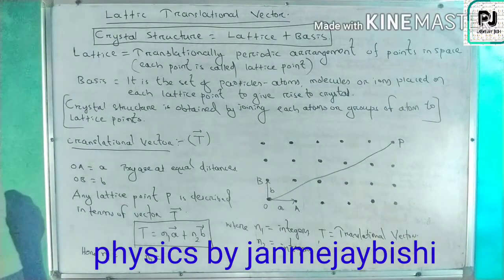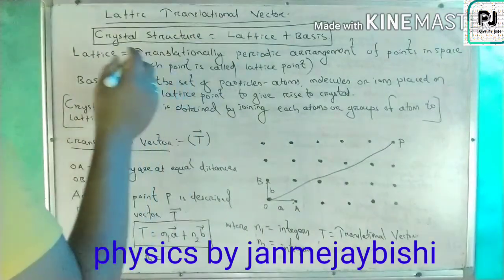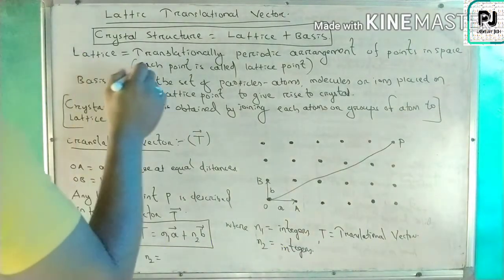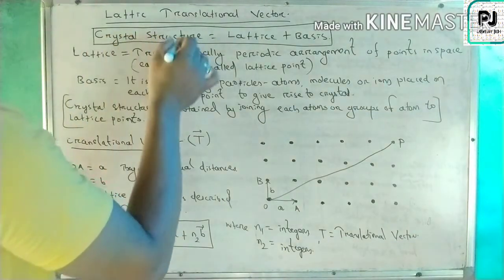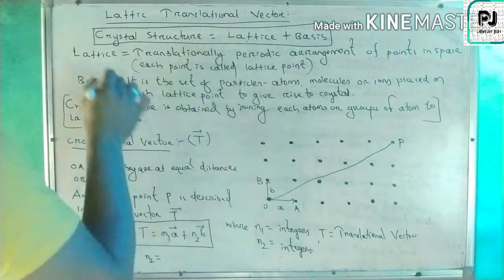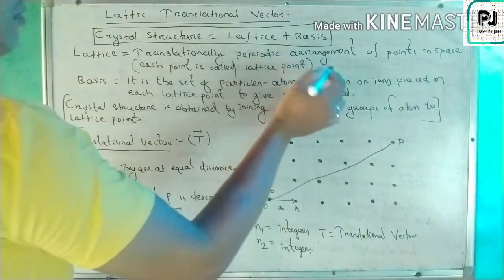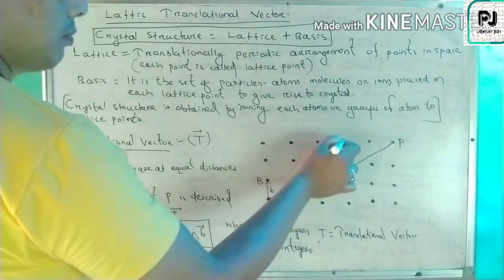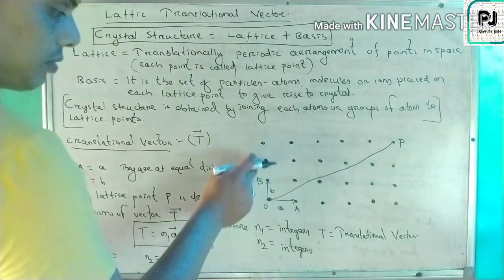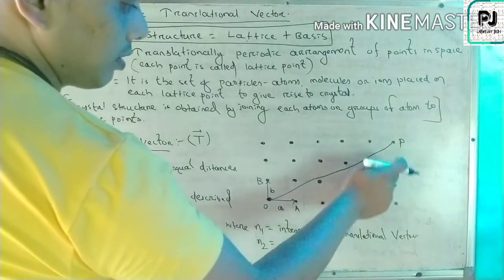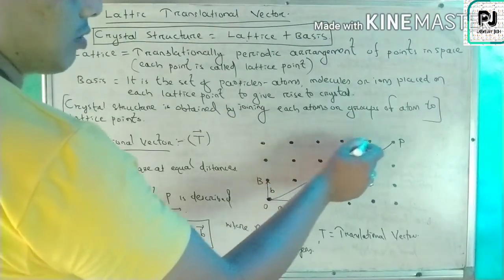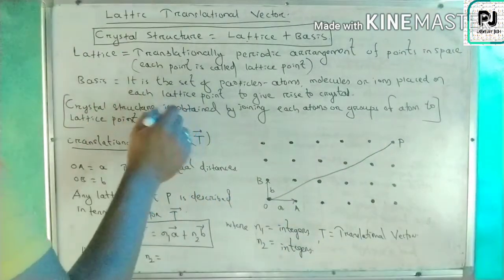What is the meaning of the lattice translational vector? First we know what is the meaning of the lattice and what is the meaning of the basis. When we are telling about the crystal structure, that is the combination of the lattice and the basis. The lattice is the three-dimensional periodic arrangement of points in space. Each point is called the lattice point.